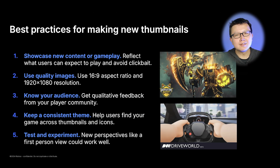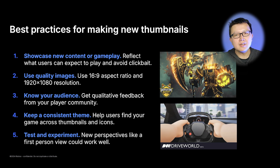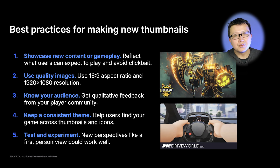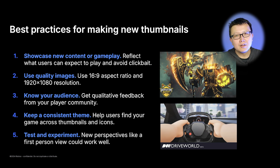When it comes to making new thumbnails, the number one most important thing is to make sure your thumbnail actually reflects what users expect to play in your experience. Showcase new gameplay or new content. Remember, we're optimizing for qualified playthrough rate, which means users not only have to click your thumbnail and join, but also stick around and do something in your game — so really try to avoid clickbait thumbnails. It's also important to use high-resolution quality images. Consider testing your thumbnails in your community and getting feedback before starting personalization. Try to keep a consistent theme so users can recognize your thumbnails, icons, and different variations. Finally, be open to testing and experimenting — try new perspectives, like a first-person behind-the-wheel view for a driving game, which could work very well.